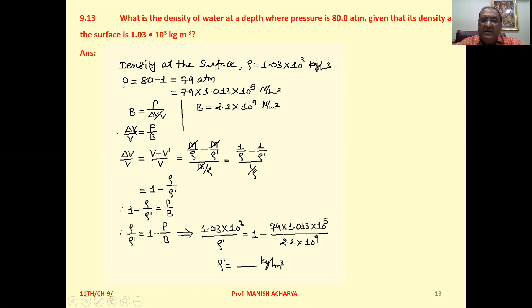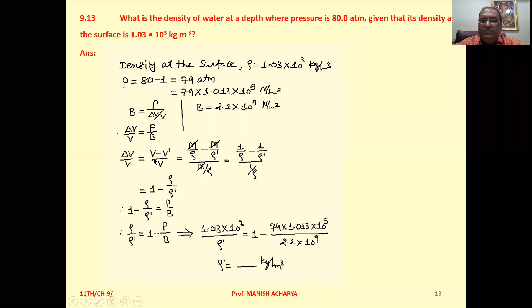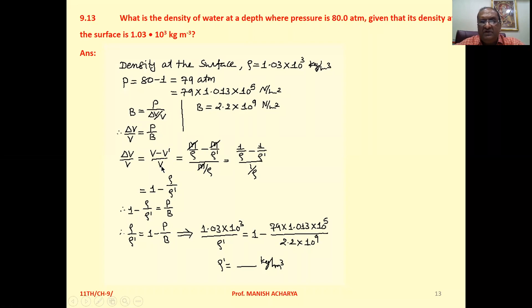We can write delta V by V equals change in volume, so initial minus final over initial. This equals volume as mass over density.